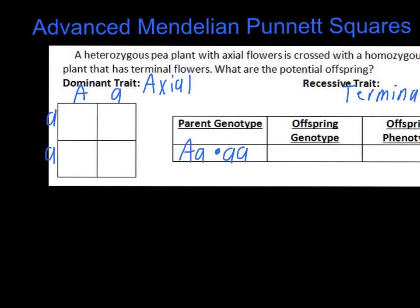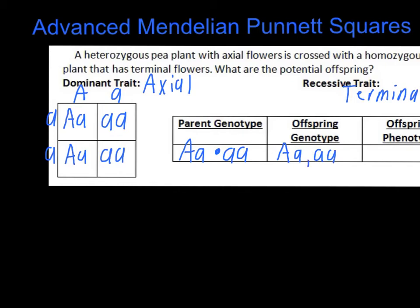It's just like those little multiplication tables from when you were a kid. So in this one we've got capital A and lowercase a across the top. We have two lowercase a's down the side. Looking at how these intersect: we get capital A, lowercase a in the first box; lowercase a, lowercase a in the second box; and the same pattern for the bottom row. So the next step is to figure out the offspring genotypes. In this case we have two different options: the heterozygous one, capital A lowercase a, and homozygous recessive, two lowercase a's.